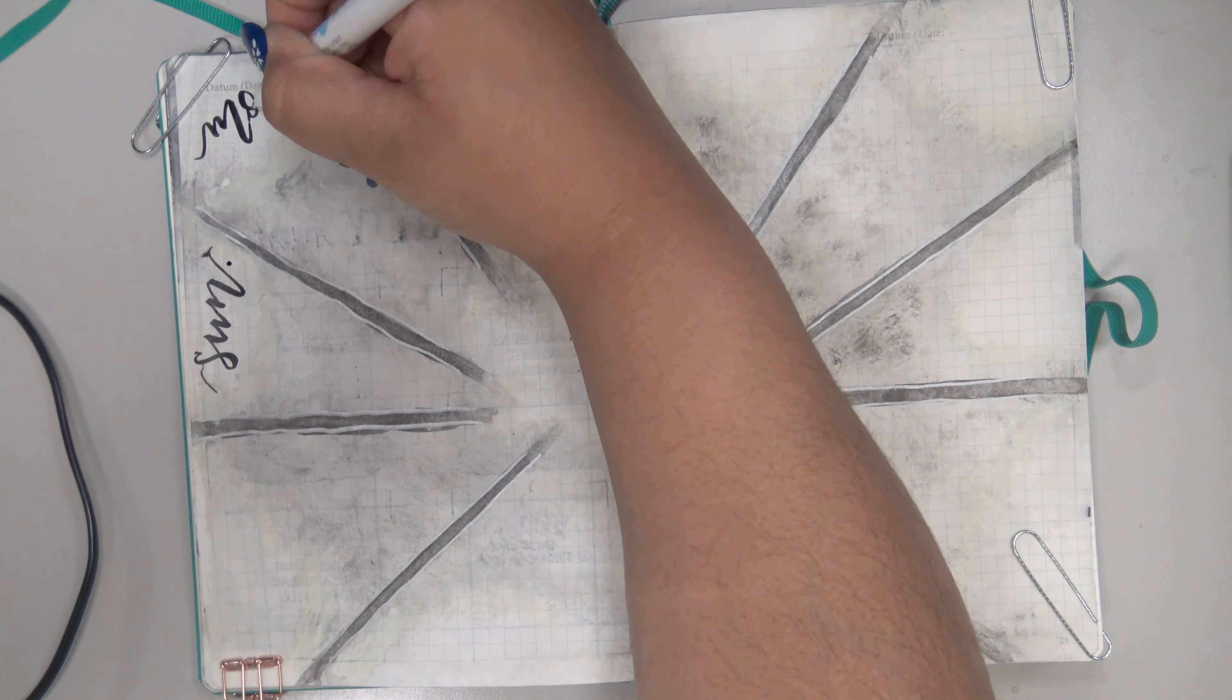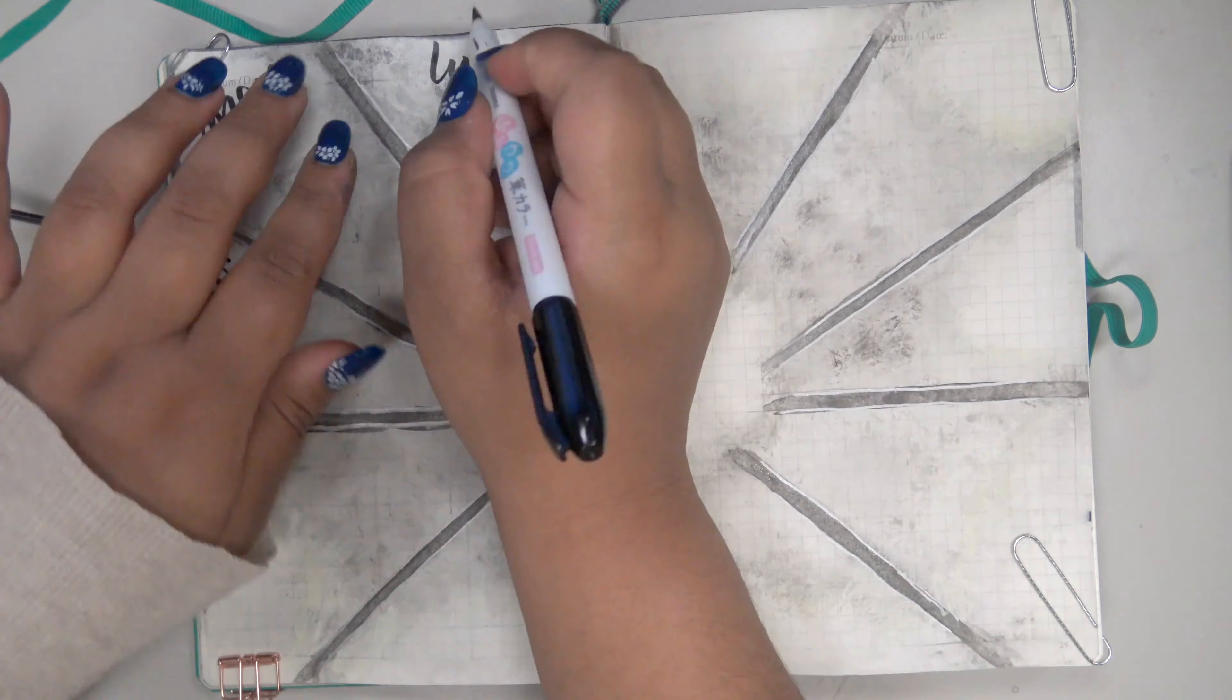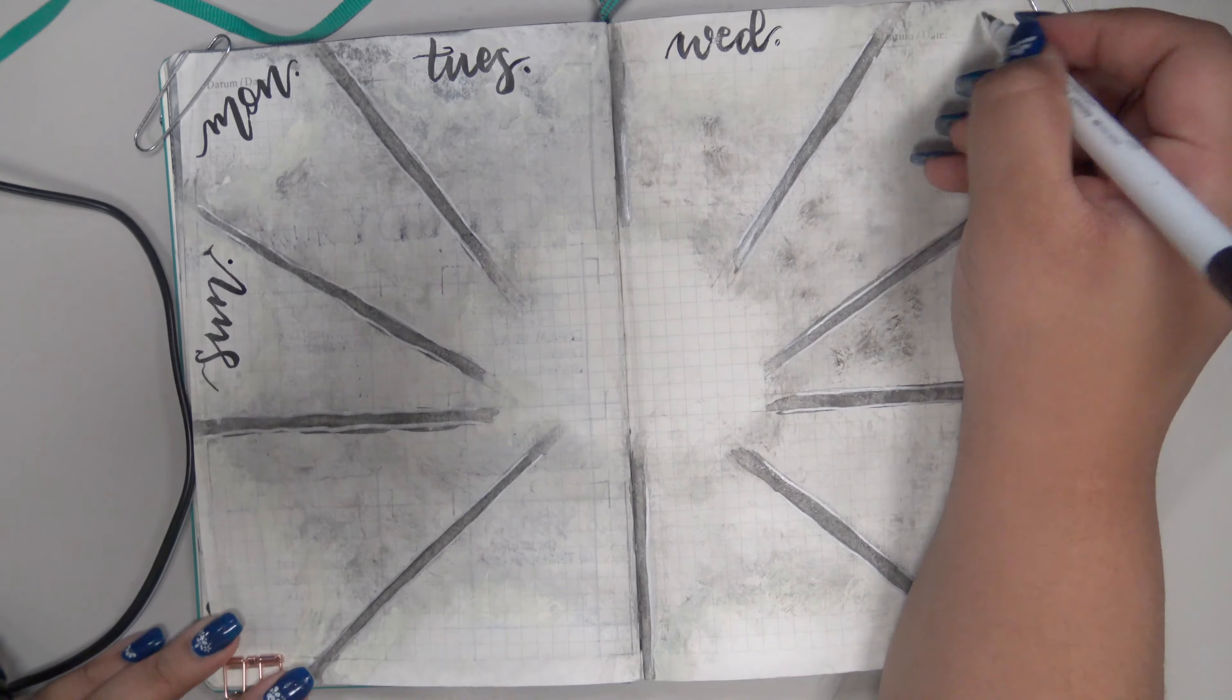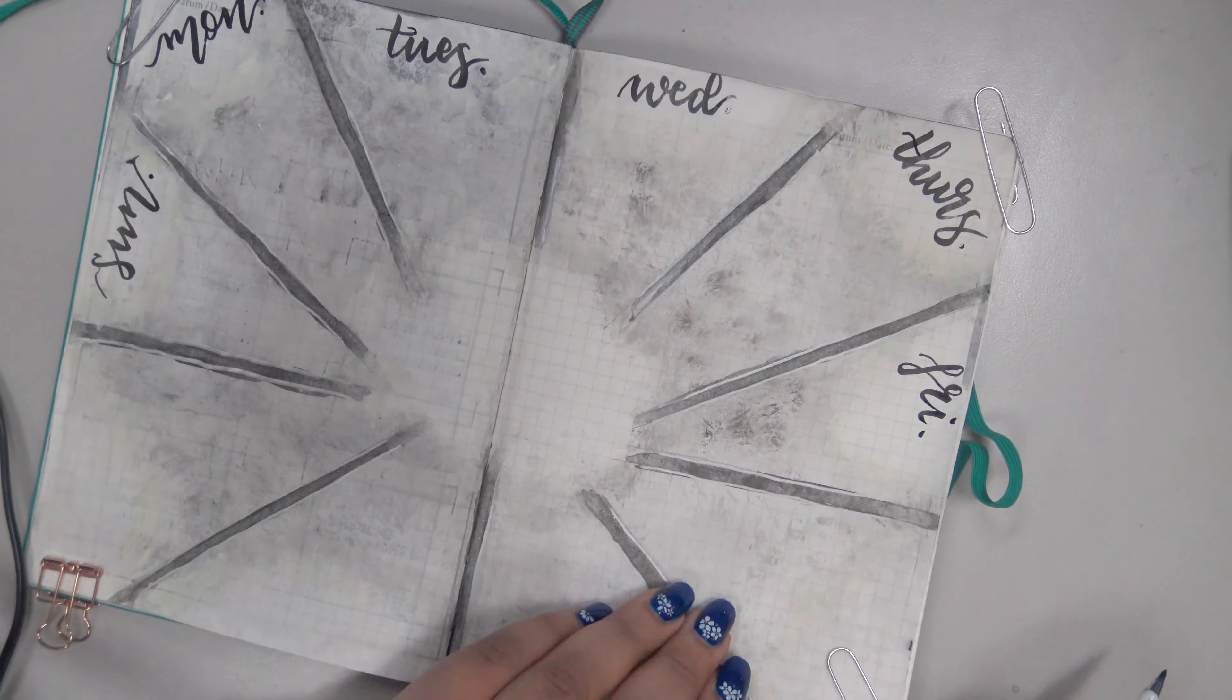After writing the days of the week, I defined the edges of the clouds with a dark gray Staedtler fineliner and added some shading with my Zig brushable, blending it with my finger on the bottom edge of each cloud.